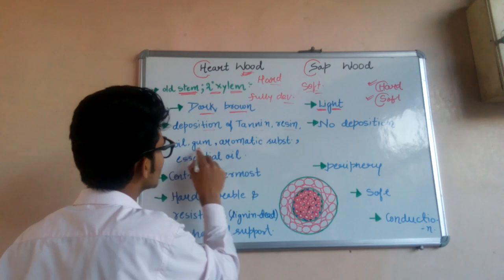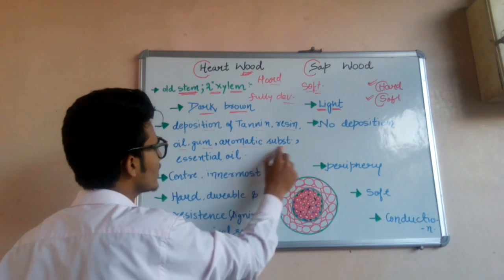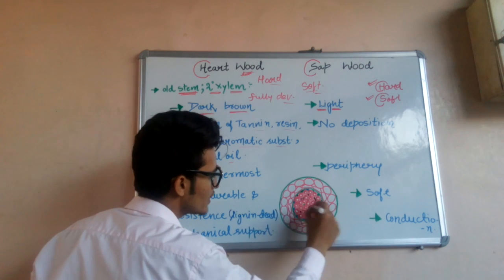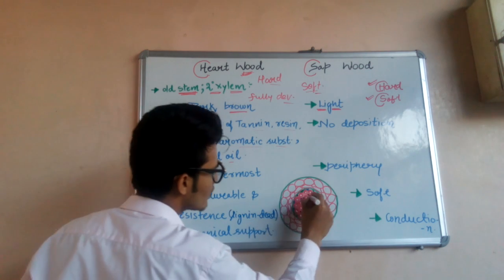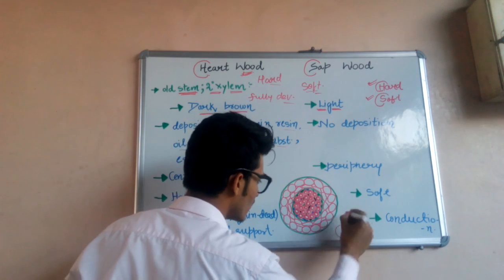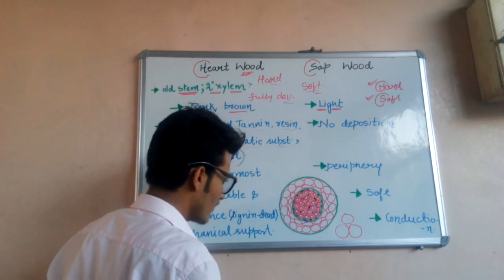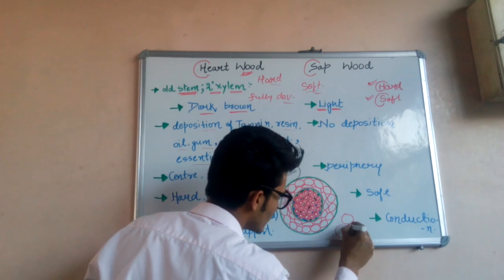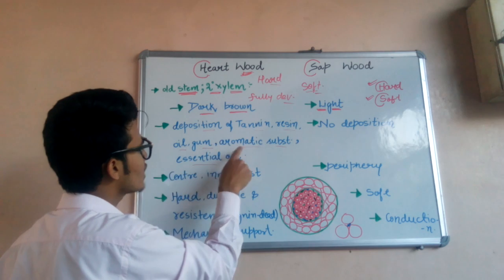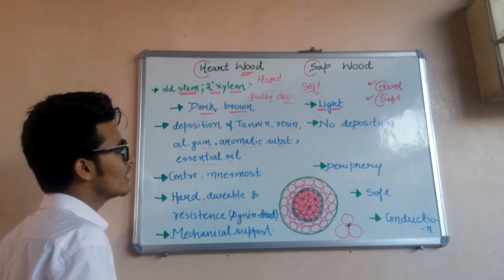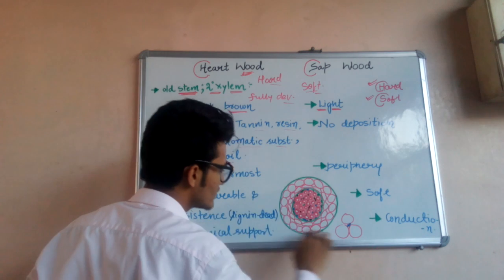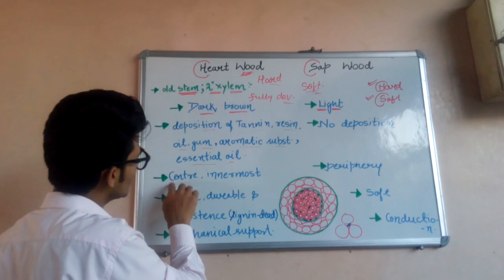There is deposition of tannins, resins, oils, gums, aromatic substances, and essential oils in hardwood, which are shown here by different colors present in the intercellular spaces between two cells. However, no such substances are deposited in sapwood.